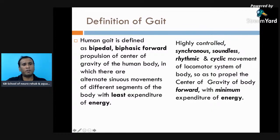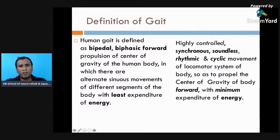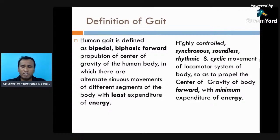There are two important points: it has to be bipedal, biphasic forward propulsion of the body, and there has to be least energy expenditure in gait. Some books also define it as the highly controlled, synchronous, soundless, rhythmic, and cyclic movement — emphasizing that it has to be synchronous, soundless, and rhythmic, because the same cycle gets repeated as the body propels forward with minimum energy expenditure.